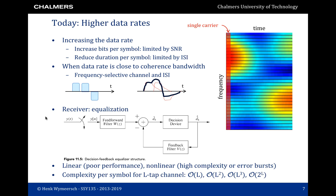Inter-symbol interference in single carrier systems is typically combated through equalization. The figure shows an example of a decision feedback equalizer. We have the received signal Y with inter-symbol interference, which is sampled giving rise to a sequence of observations. This sequence is then passed through a filter which tries to remove part of the inter-symbol interference — this filter is based on a channel estimate. In addition, we have a feedback filter which takes decisions regarding previous symbols. The feedback filter is based on the channel estimate and, if the decisions are correct, we can completely remove inter-symbol interference from past symbols.